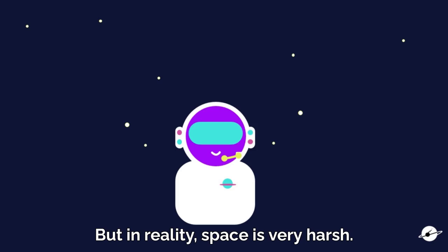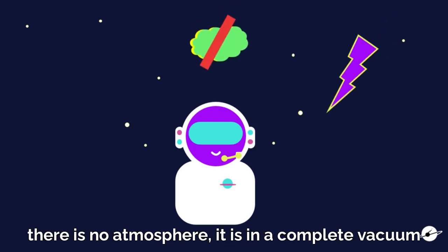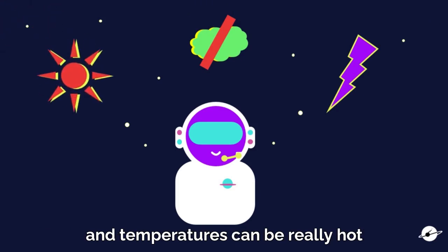But in reality, space is very harsh. It has very high doses of radiation, there is no atmosphere, it is in a complete vacuum, and temperatures can be really hot or really cold, depending if you are facing the Sun or if you are in its shadow.